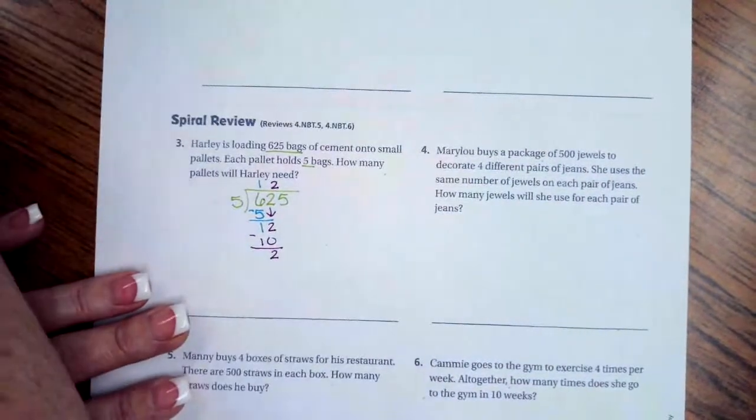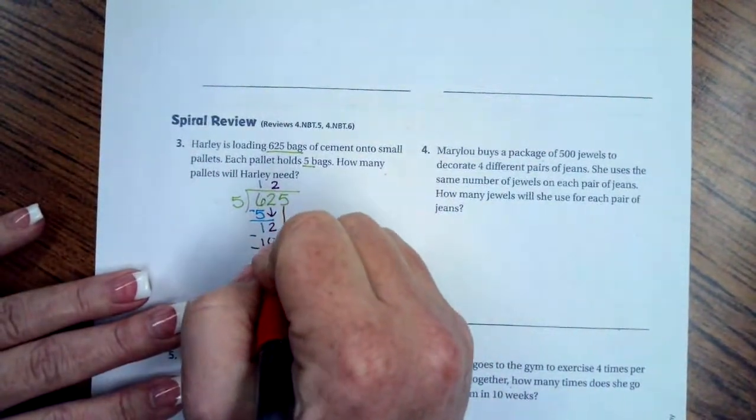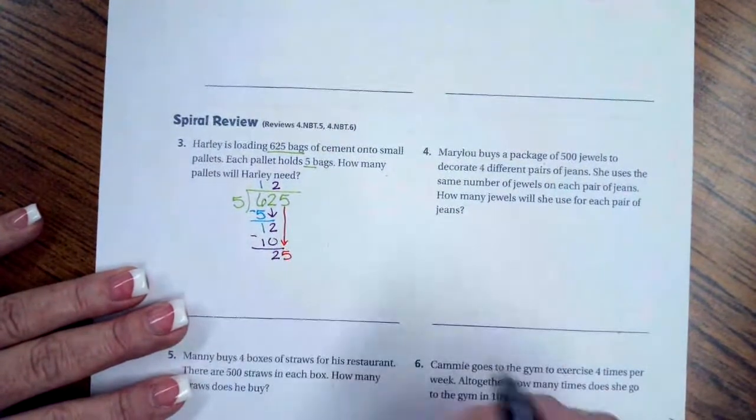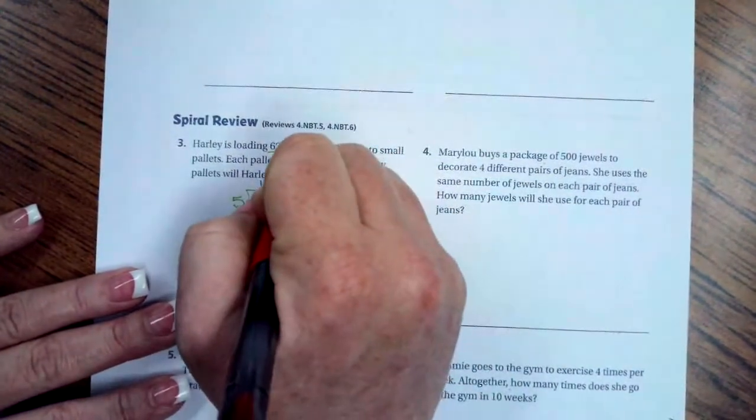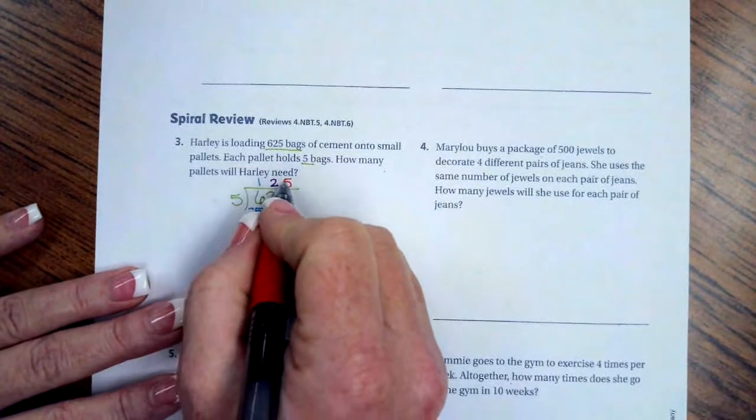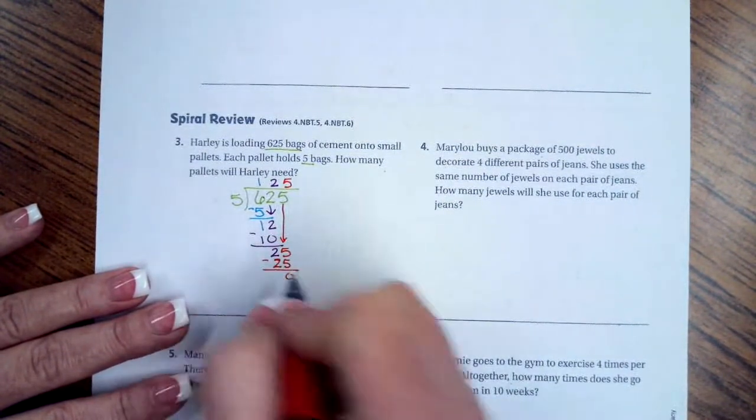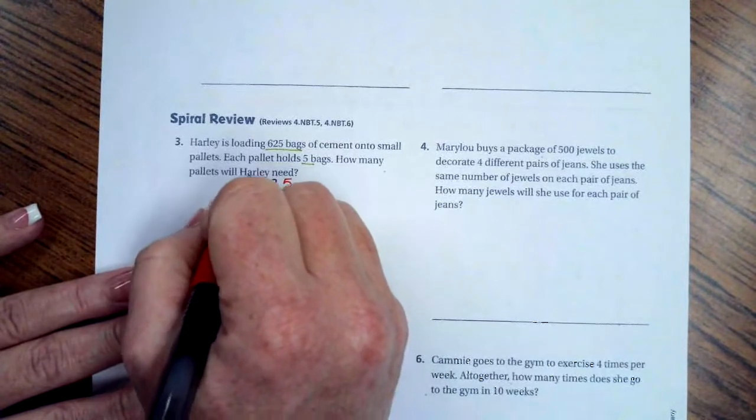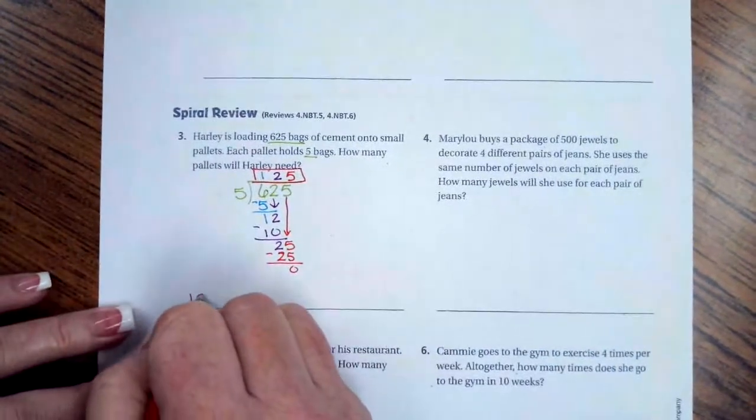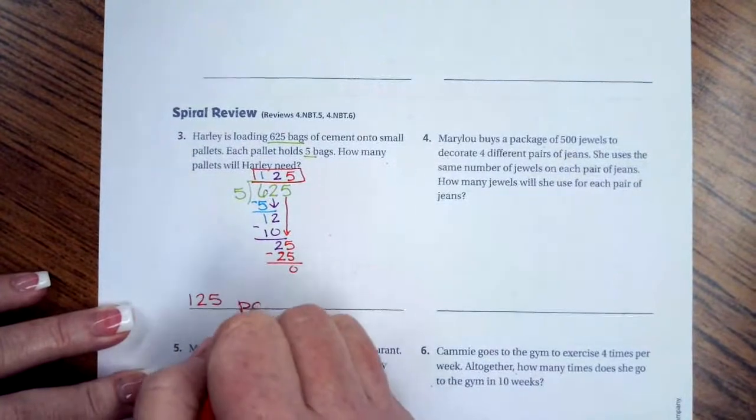Five goes into 25 five times. 5 × 5 = 25. When I subtract, I get zero, so my answer is going to be 125 pallets.